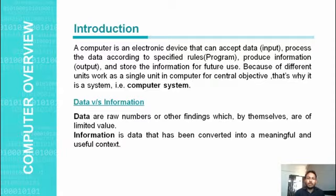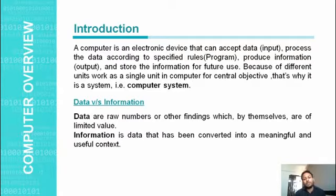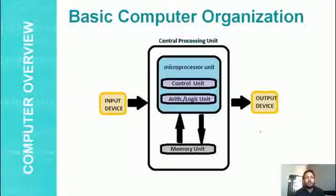Now we move to the next topic: data and information. What is data? Data are the raw facts and figures which have no meaning. Information means when we process the data, it becomes information — the data that is converted into a meaningful and useful context is information. Here is a basic computer organization, the structure of a computer.